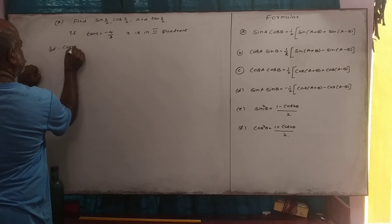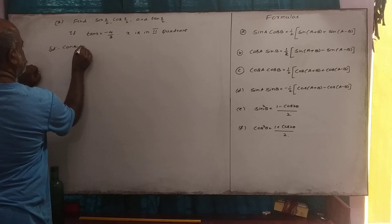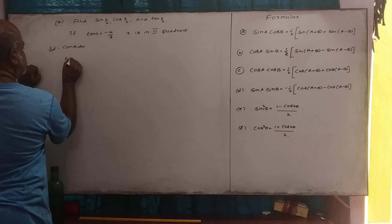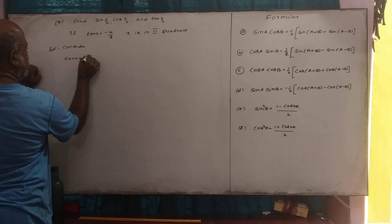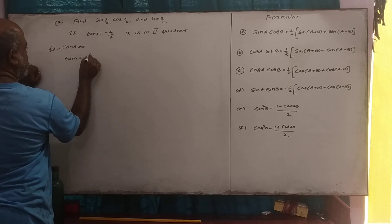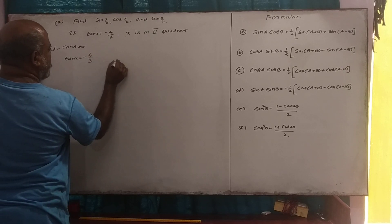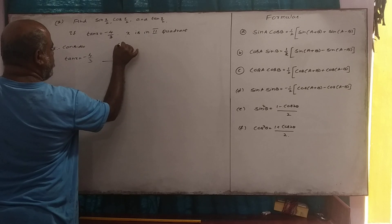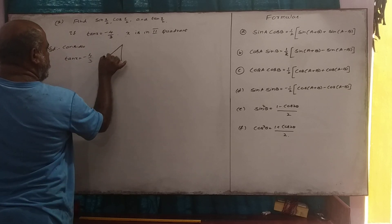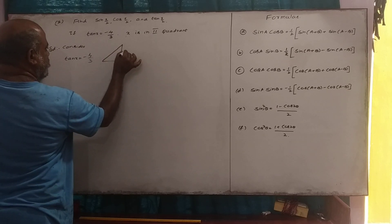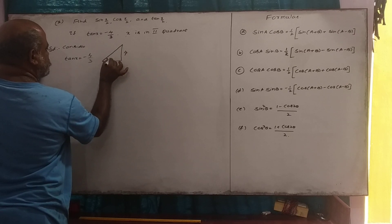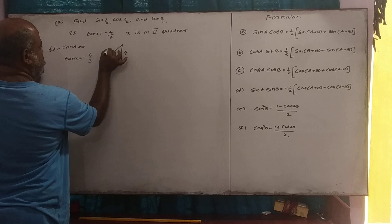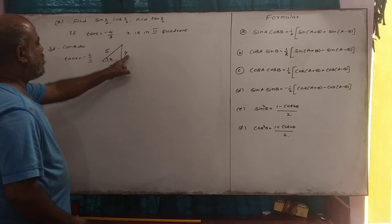Given tan x is equal to minus 4 by 3, we need to find tan x by 2 and cos x by 2 using the half-angle formulas.